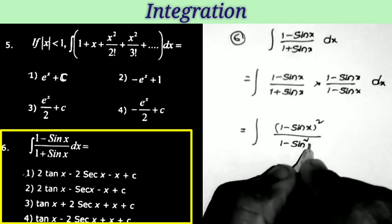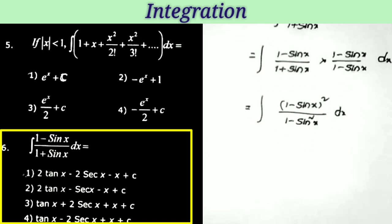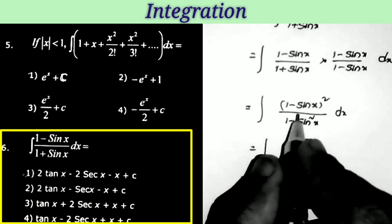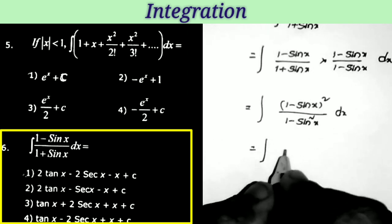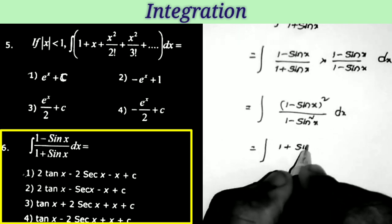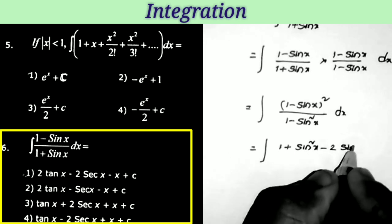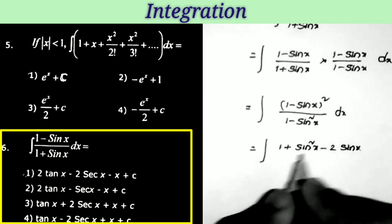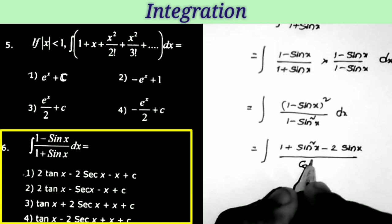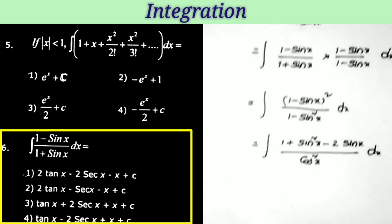Expanding (1 − sin x)² using (a − b)²: 1 + sin²x − 2sin x. The denominator 1 − sin²x equals cos²x. Now separating the denominator. Also substituting sin²x = 1 − cos²x in the numerator.